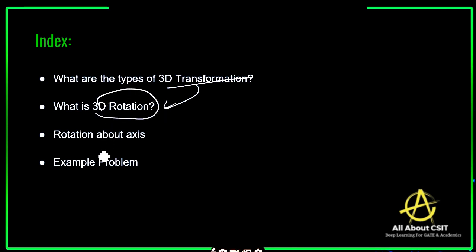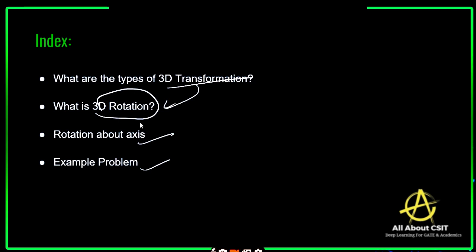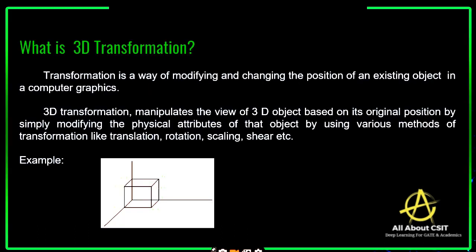What exactly is 3D rotation, and rotation about an axis? 3D means it will be on the XYZ plane, so we have to know about the different axis rotations: X rotation, Y rotation, and Z rotation. Finally, we will see one example problem. At the end of this video, you'll get complete clarity on what exactly 3D rotation is.